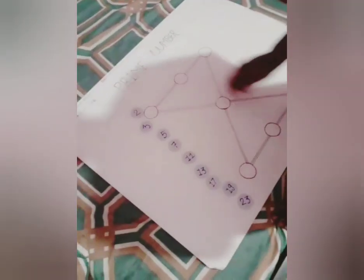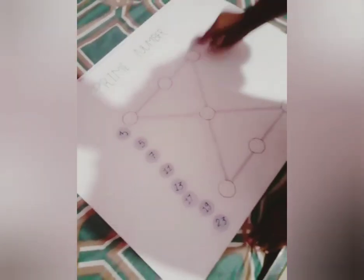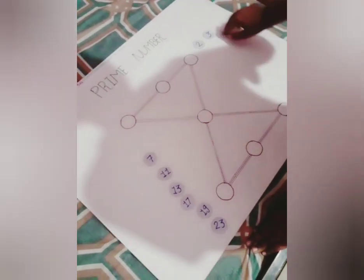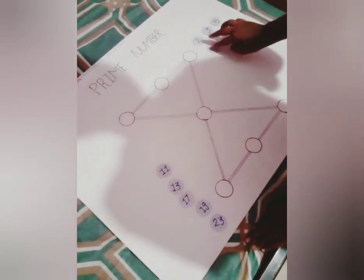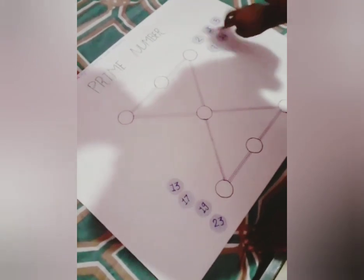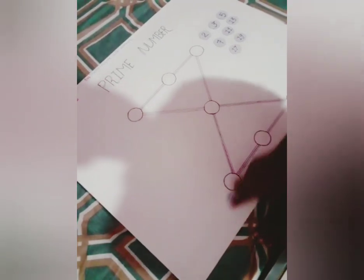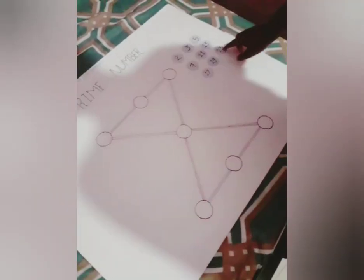For example, see, 2 is a prime number, 3 is also a prime number, 5 is a prime number, 7 is a prime number, 11 is a prime number, 13 is a prime number, 17 is a prime number, 19 is a prime number, 23 is a prime number, and etc.